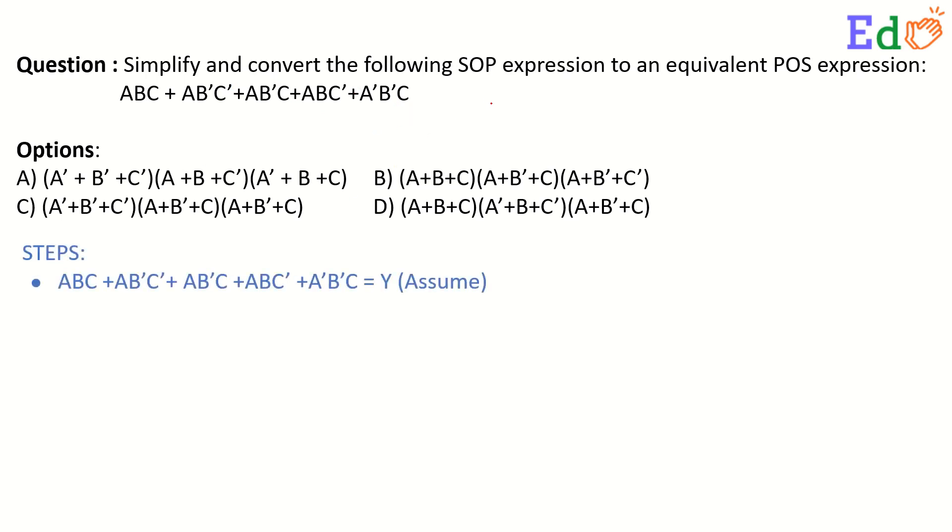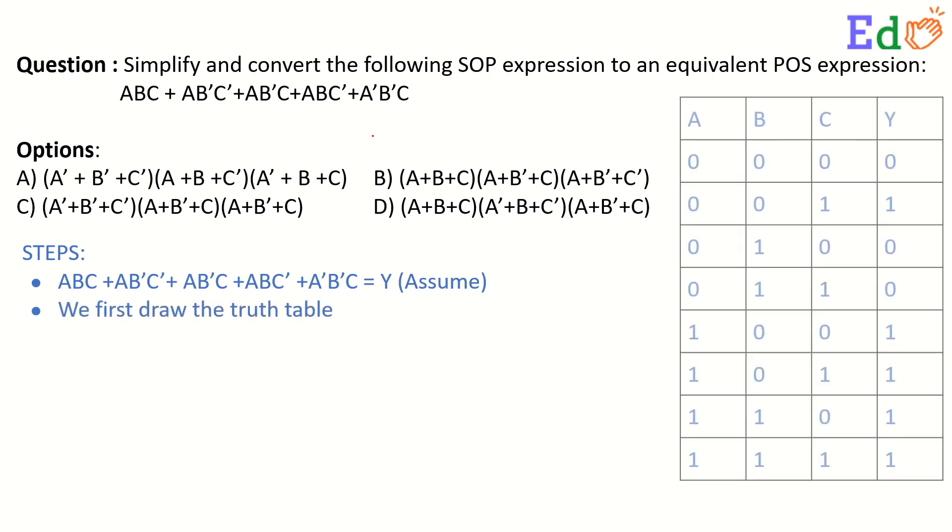Now the first step is to generate the truth table of the SOP expression that is given. To generate the truth table we first write the three input truth table like this. ABC are the inputs, Y is the output. So we can write all the combinations of the ABC inputs. From these combinations we shall see all the factors for which the Y has to be 1 for the SOP expression.